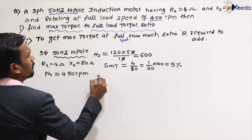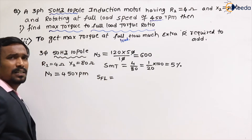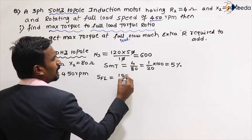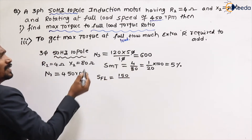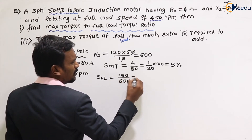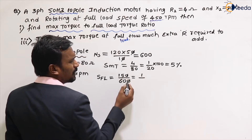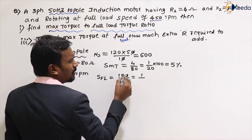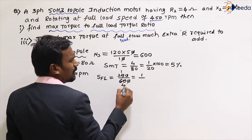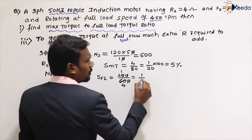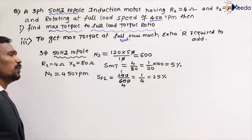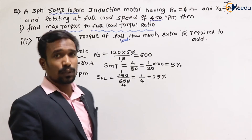The given full load rotor speed is 450 rpm. So slip at full load = (ns − nr)/ns = (600 − 450)/600 = 150/600 = 1/4 = 25%.